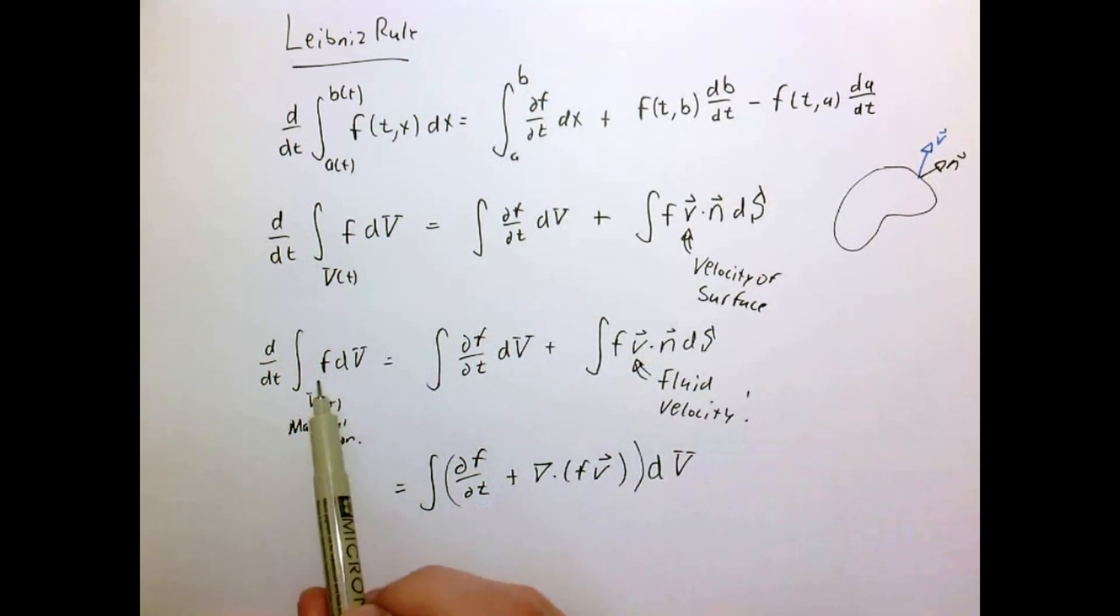Which is the time rate of change of some function integrated over our material volume is equal to this thing right here. So the change with respect to time and the divergence of the function itself times the fluid velocity. So let's see how we can use this in a couple of applications.